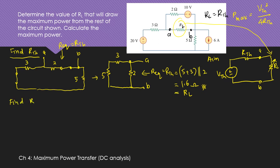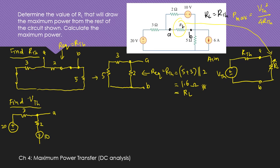Second, find VTH. Remove the load RL so it becomes an open circuit. Keep the rest of the circuit as is: 3 ohms, the 20-volt source, terminal A, 2 ohms, and the current source going in its direction. Rearranging the circuit so it's in a familiar form, the open-circuit voltage equals VTH. The open circuit terminal is at A and B with positive-minus polarity for VTH.